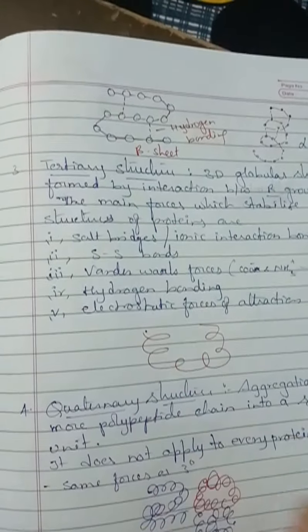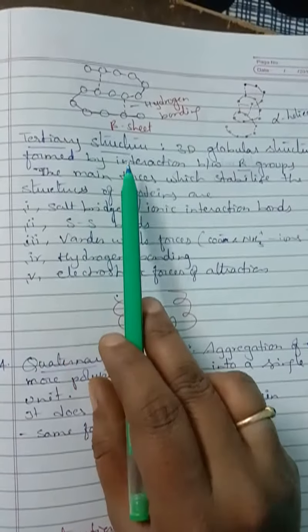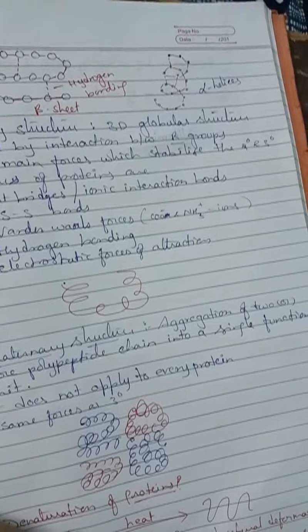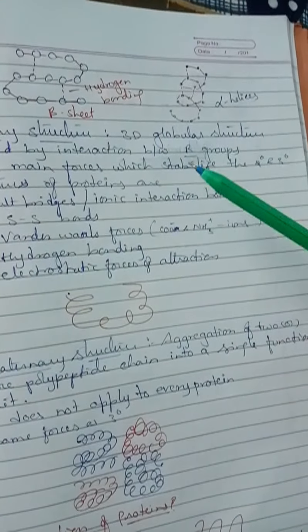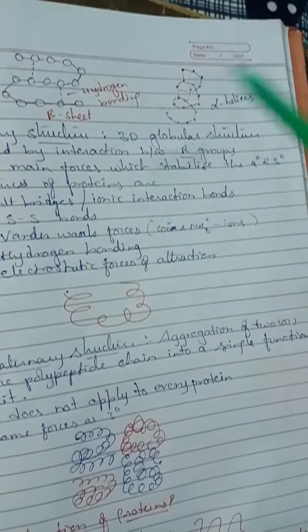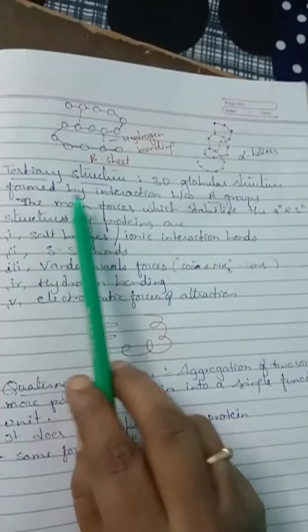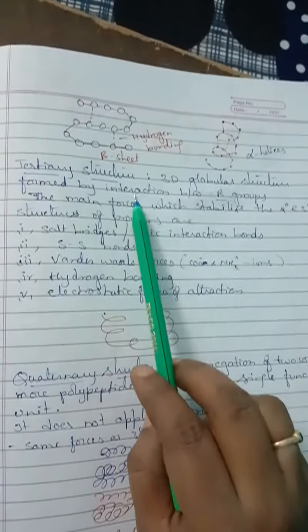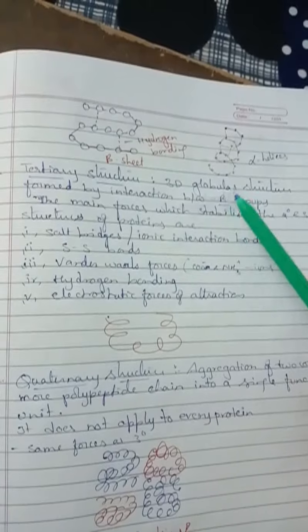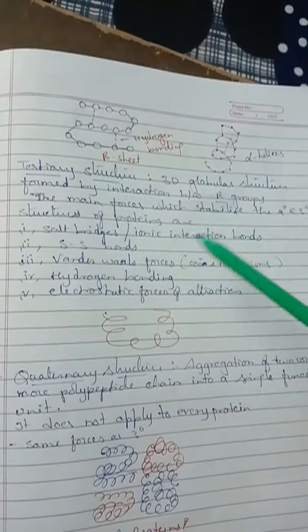The tertiary structure represents the overall folding of polypeptide chains — further folding of the secondary structure. Based on their molecular shape, proteins are of two types: fibrous proteins and globular proteins. In tertiary structure, a 3D globular structure is formed by interaction between R groups, meaning side chains. The main forces that stabilize secondary and tertiary structures include salt bridges or ionic interactions, disulfide bonds, van der Waals forces, hydrogen bonding, and electrostatic forces of attraction.